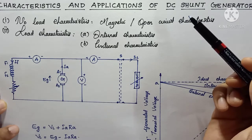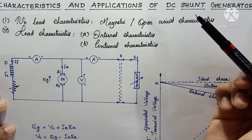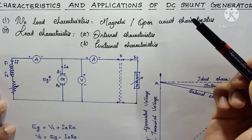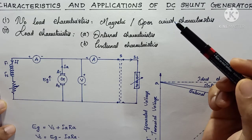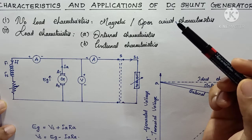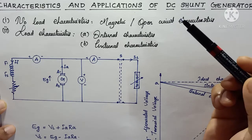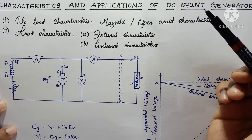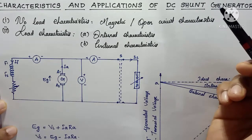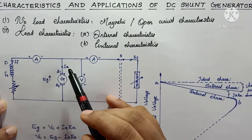We already discussed the open circuit characteristics of DC series generators in the previous video, and the OCC of a DC series generator is the same as that of a DC shunt generator. This OCC is similar to that of a separately excited DC generator, but the difference is that in separately excited generators the field windings are excited from an external DC source, whereas in self-excited generators the field windings are excited from the generator itself.